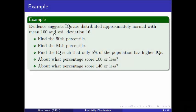Let's do an example. It turns out that intelligence quotients, or IQs, are distributed approximately normal with mean 100 and standard deviation 16. Let's calculate the 90th percentile. That'd be good to know, right? Then if you take an IQ test and score above the 90th percentile, you know you're doing pretty good.